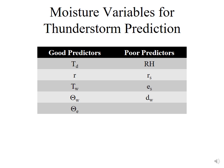Poor predictors that you would not want to use to diagnose low-level moisture for thunderstorm development would be relative humidity, the saturation mixing ratio, the saturation vapor pressure, and the precipitable water. Relative humidity is a poor predictor because all it tells you is how close you are to saturation, and you could be close to saturation at a low temperature and not have a lot of water vapor available. The saturation mixing ratio and saturation vapor pressure don't tell you how much water vapor you actually have — they just define how much you possibly could have, and both depend upon temperature.